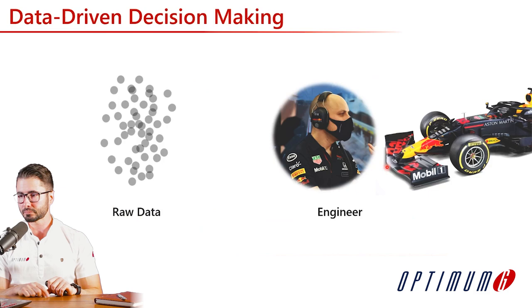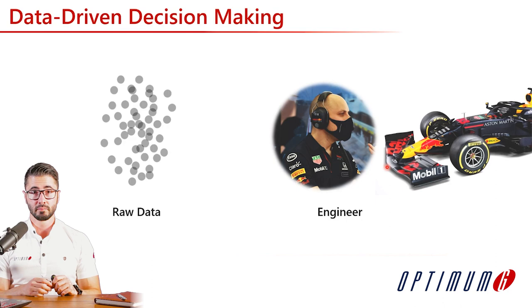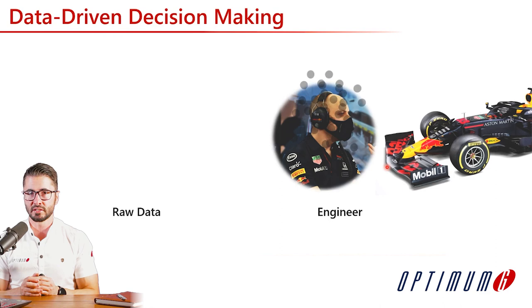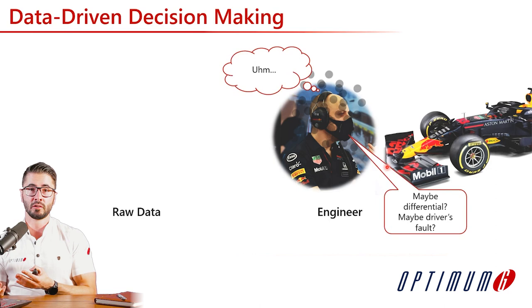What would be a data-driven decision-making process? We have a lot of raw data from all the different sources we already explained. An engineer receiving this raw data might just be guessing — it could be the differential, we could be blaming the drivers — but we are not completely sure; we are just using experience to try to guess what is causing the balance or behavior issue.